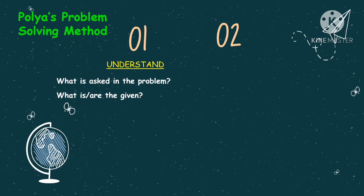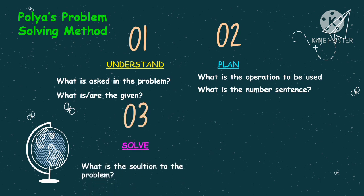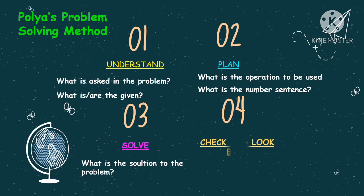The second step is to plan — we will plan for the operation to be used and the number sentence. The third step is to solve, using the number sentence to find the solution. And the fourth step is to check and look back: what is the answer to the problem?